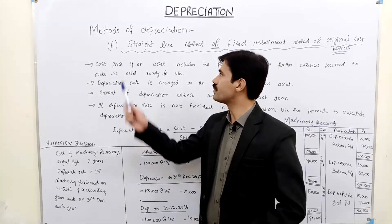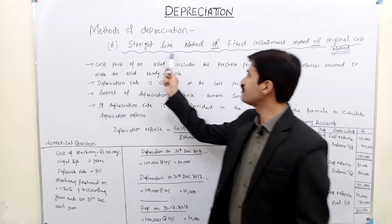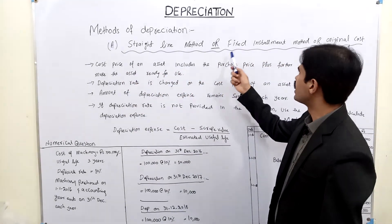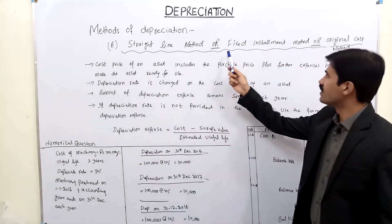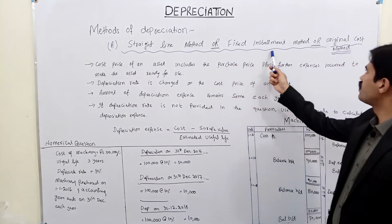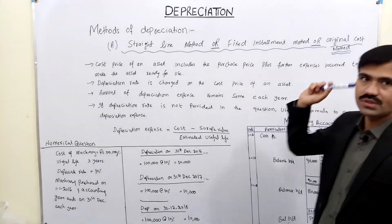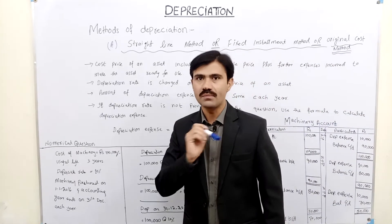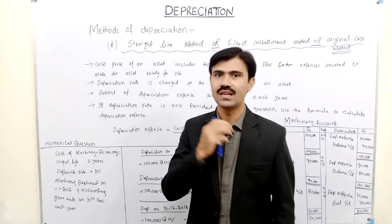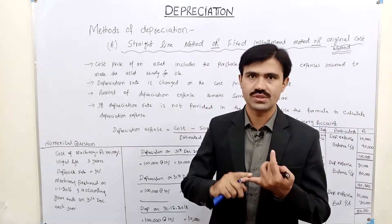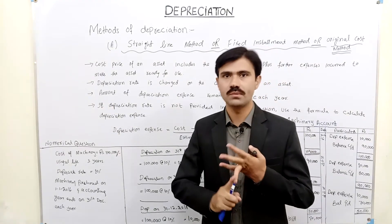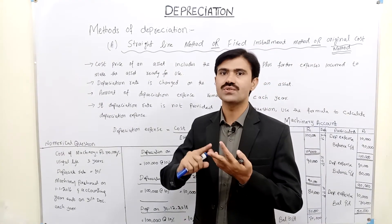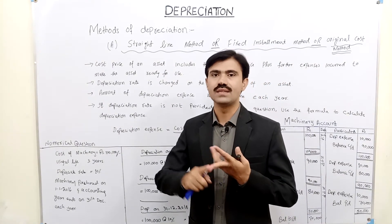The first method of depreciation is the straight-line method. It has three names: original cost method, fixed installment method, and straight-line method. These all refer to the same method.